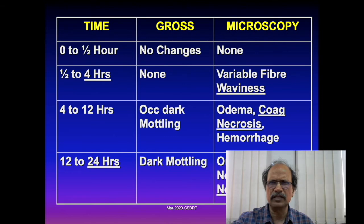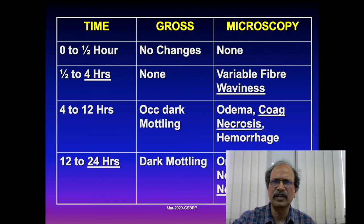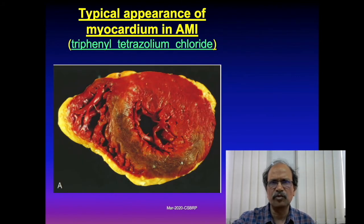Neutrophils appear within 24 hours of injury, so if a neutrophil is seen in the infarcted area, the infarct is more than 24 hours old. Macrophages appear after three days — so their presence indicates the infarct is more than three days old. Granulation tissue forms around seven days, giving hyperemia to the area, indicating the infarct is more than one week old. A depressed, fibrotic area suggests more than two weeks.